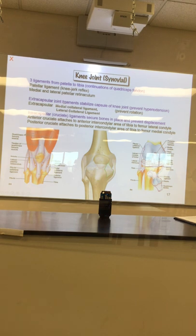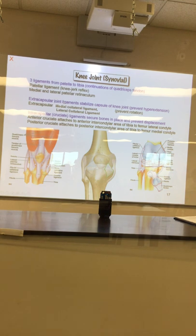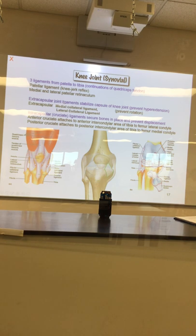Fibrocartilage — one more time, what is the meniscus made of? Fibrocartilage makes up the meniscus, which some synovial joints have. Synovial joints are freely moving, diarthrotic joints — but not all synovial joints have menisci.